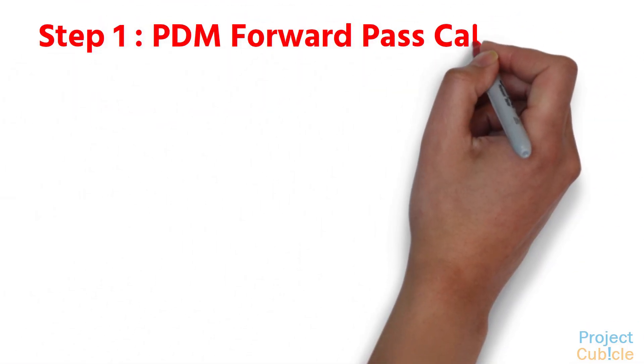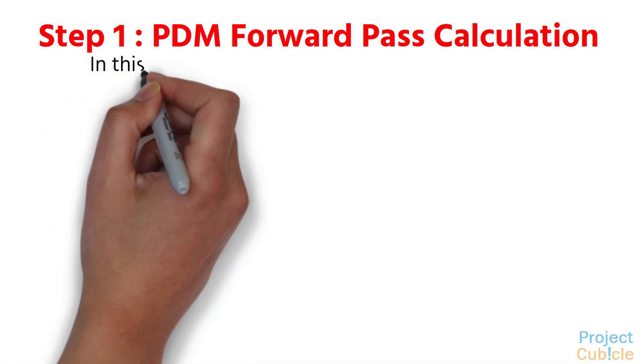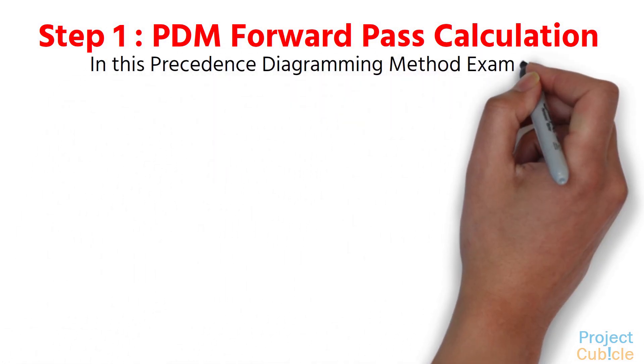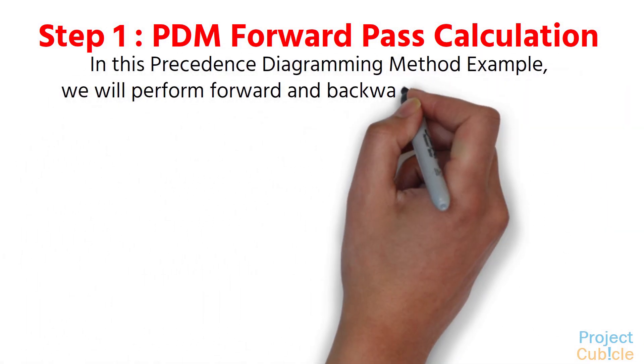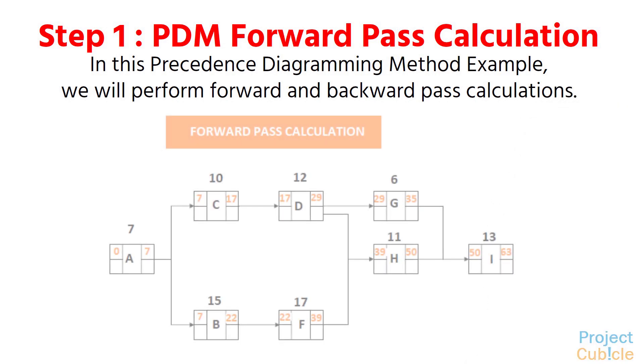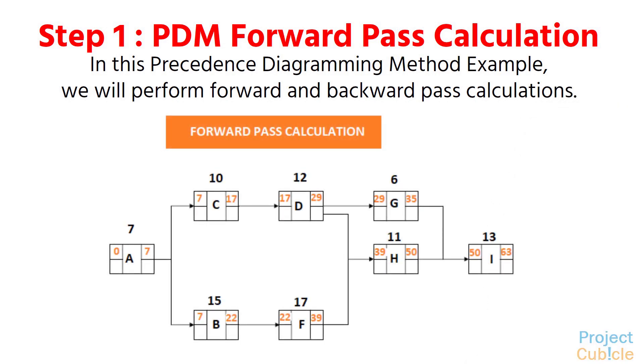Step 1: PDM Forward Pass Calculation. In this Precedence Diagramming Method example, we will perform forward and backward pass calculations. Forward pass calculations specify the minimum dates at which each activity can be performed and, ultimately, the minimum duration of a project.